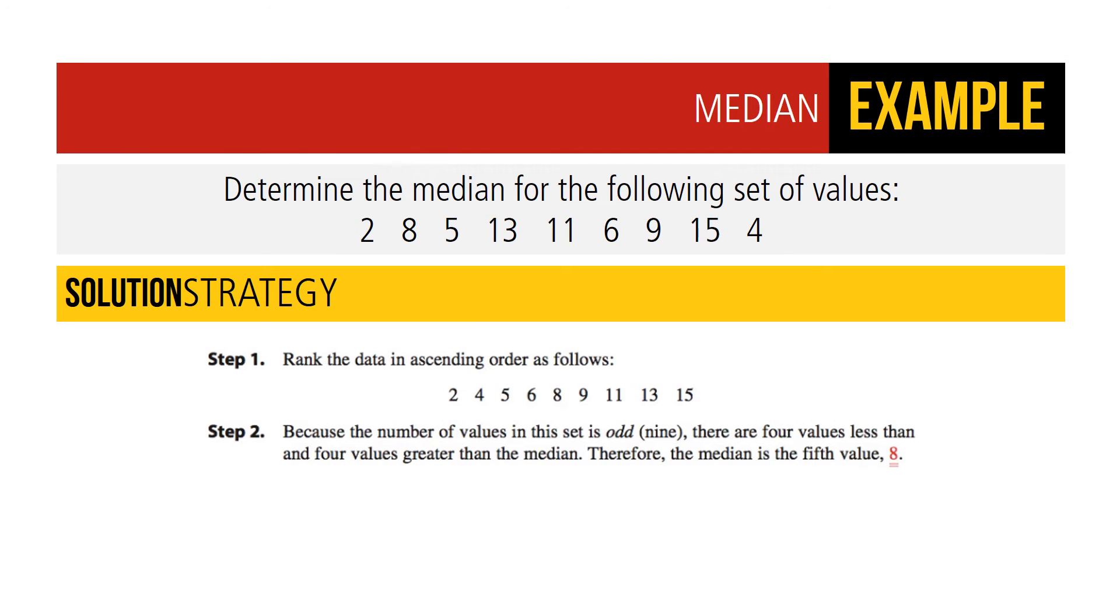Determine the median for the following set of values. First, step 1, we rank the data in ascending order as follows: 2, 4, 5, 6, 8, 9, 11, 13, and 15. Step 2: because the number of values in this set is odd, there's 9, there are four values that are less and four values that are greater than the median. Therefore, the median is the fifth value, which is 8.